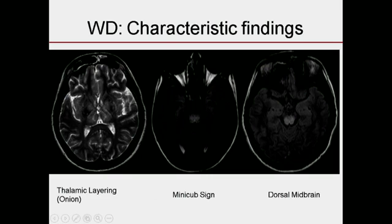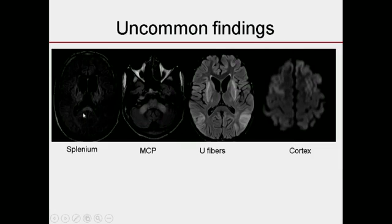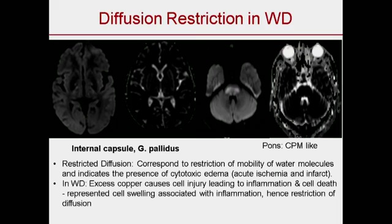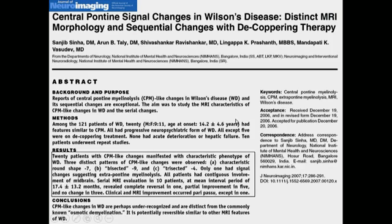Some other uncommon findings: the thalamus has an onion peel-like appearance — known as the minicub sign. There are dorsal midbrain and tectal plate changes. Further uncommon findings include corpus callosum, splenial, middle cerebellar peduncle, U-fibre involvement, and sometimes cortex. Restricted diffusion is also occasionally seen and constitutes uncommon findings.